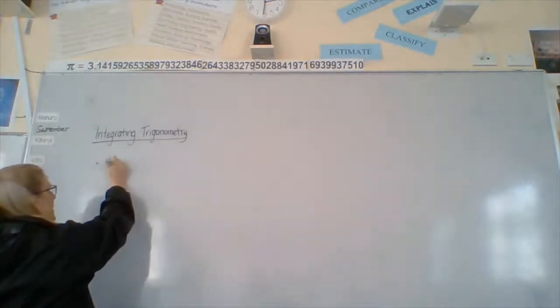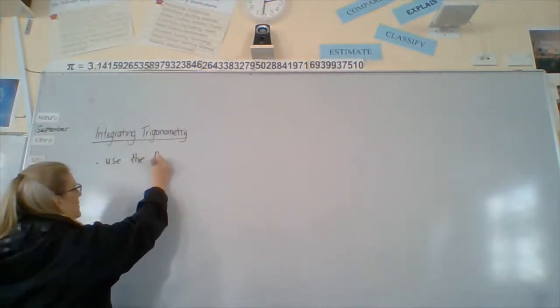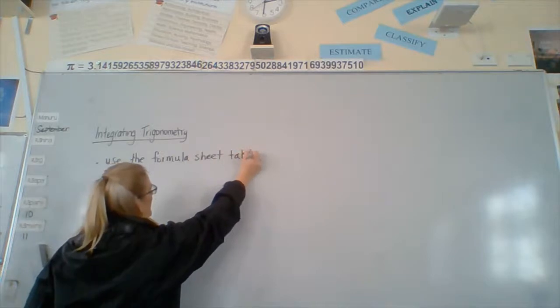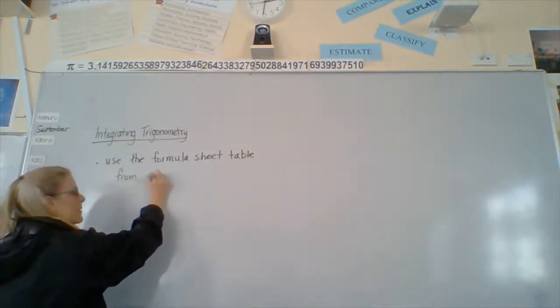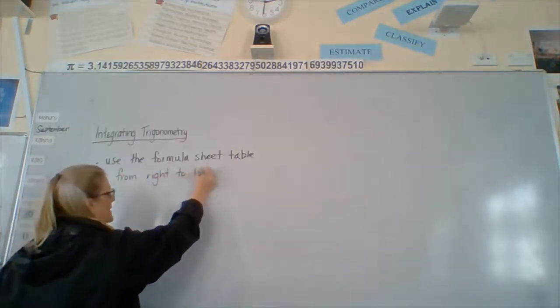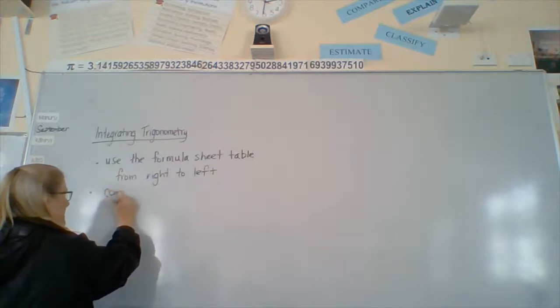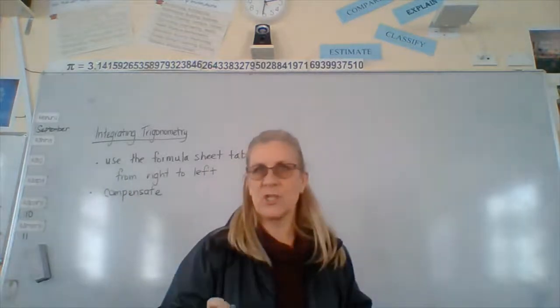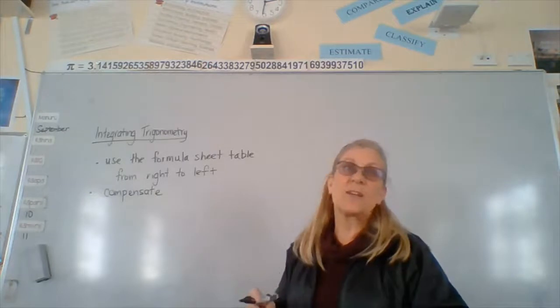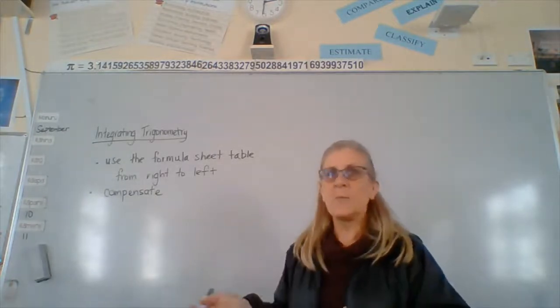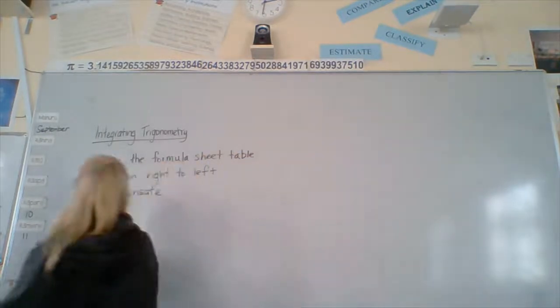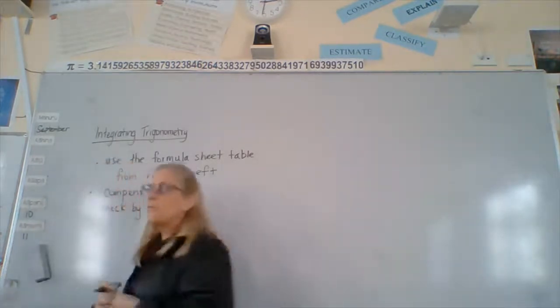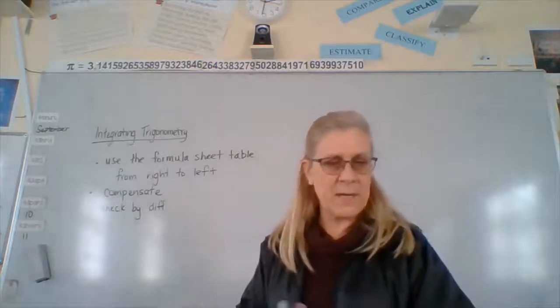So, first thing, use the table backwards. Second thing, again, we have to compensate. So, you need to make sure this is often the worst done easy question in this paper because people forget to compensate because it's tricky. And they think by going backwards on the table, that's enough trickiness. The last thing that you should do is check by differentiating. See if you get the answer back again, I mean the question back again.